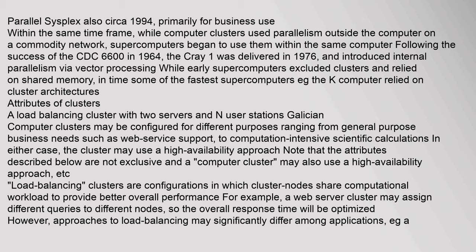Following the success of the CDC 6600 in 1964, the Cray-1 was delivered in 1976 and introduced internal parallelism via vector processing. While early supercomputers excluded clusters and relied on shared memory, in time some of the fastest supercomputers, such as the K computer, relied on cluster architectures.